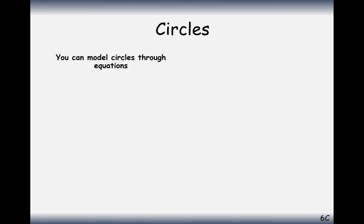So what we're going to look at is the general equation of a circle. To move the circle to a different center, if our center is (a, b), then the equation is: x minus a, all squared, add y minus b, all squared, equals the radius squared — just like we found before, where the square root of 25 is 5 to get the radius.